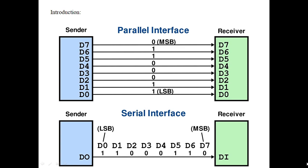In parallel communication, the data is transmitted from transmitter to receiver multiple bits at a time — that means 8 bits at a time. The advantage of parallel communication is that since multiple bits are transmitted at a time, the data transmission time will be less, and automatically the speed of the transmission increases, so the speed of the device increases.